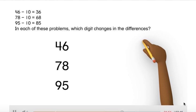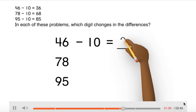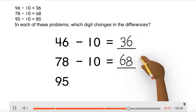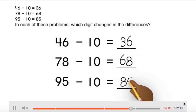46 minus 10 equals 36. 78 minus 10 equals 68. 95 minus 10 equals 85.